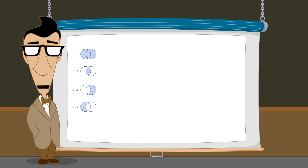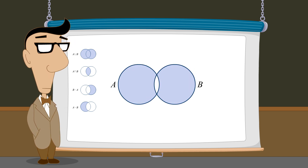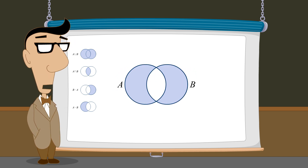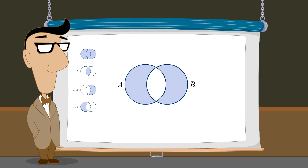However, there is another possible combination. We can form a collection of elements which are members of A or B but not both — in other words, the union of A and B without the intersection. This forms what is called the symmetric difference of A and B. The symmetric difference operand is the Greek letter delta.